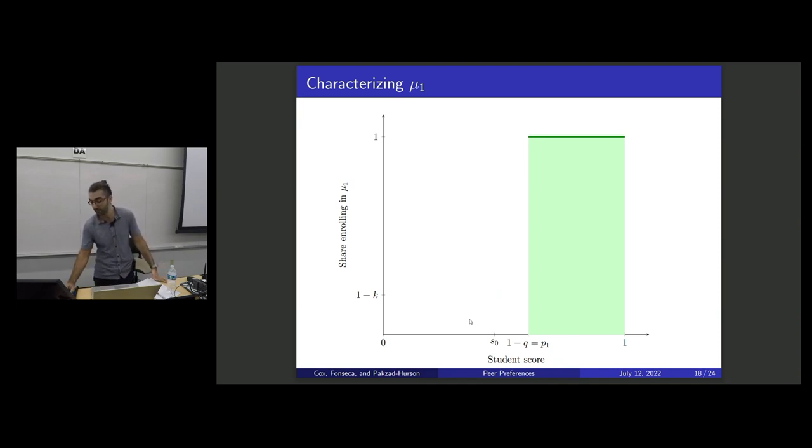All the students have some strictly positive intrinsic utility, V_theta, from showing up. And because they anticipate the mean to be down here, they all say, I'm not going to suffer this peer loss, so everyone above 1 minus Q is going to want to show up. And so the first period matching is going to look like this. Now the students are surprised. I was expecting the mean to be down here, but actually it's over here.